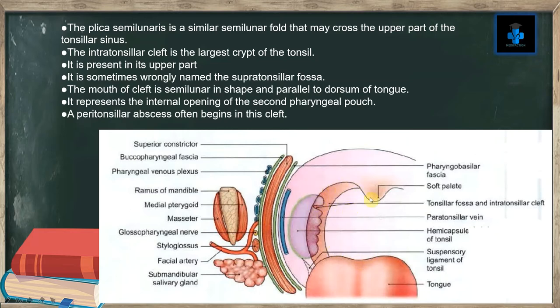Superiorly it is related to the soft palate, and inferiorly it is related to the dorsum of the tongue. The mouth of the cleft is semilunar in shape and parallel to the dorsum of the tongue. It represents the internal opening of the second pharyngeal pouch — we will discuss this further in the development section. A peritonsillar abscess often begins in this cleft.